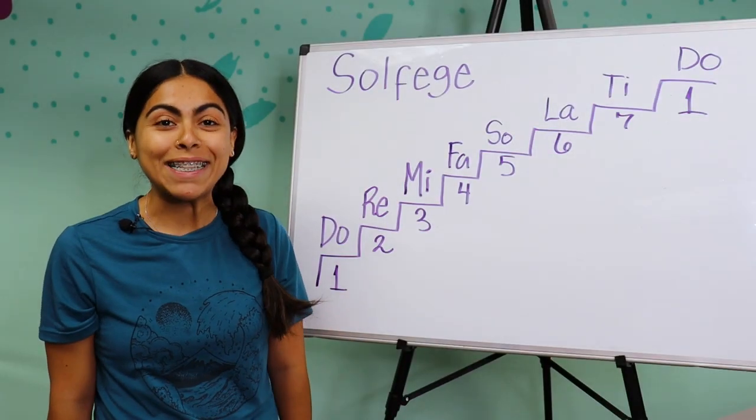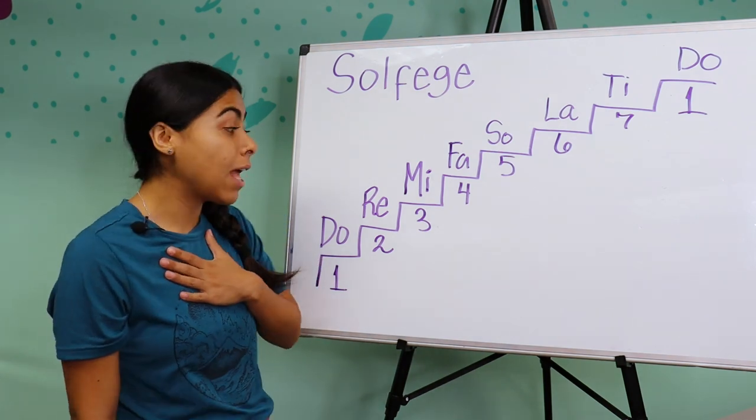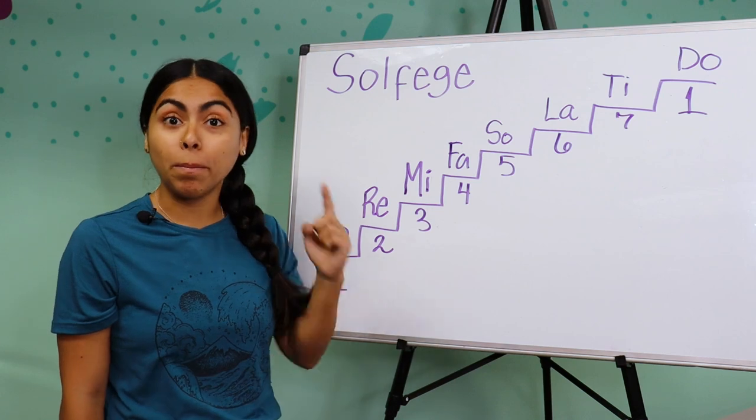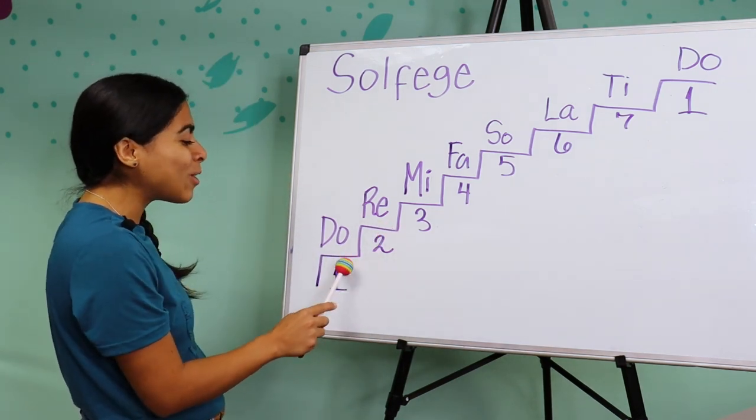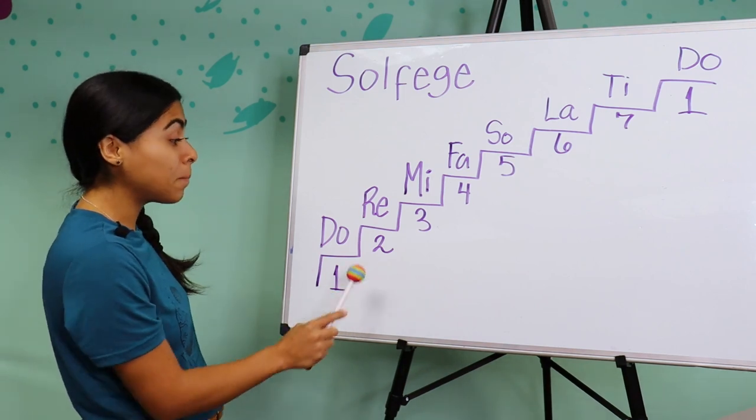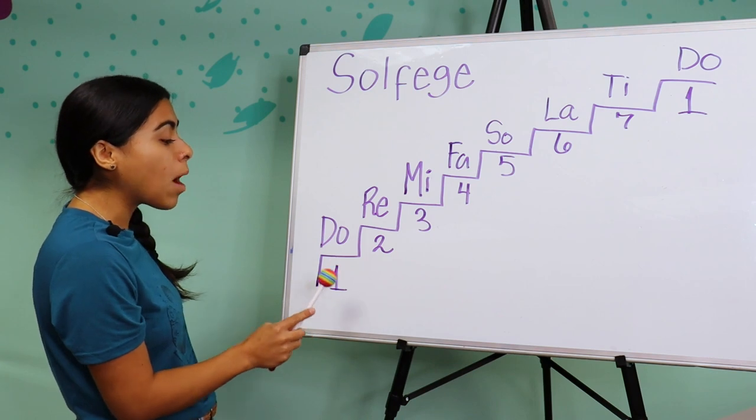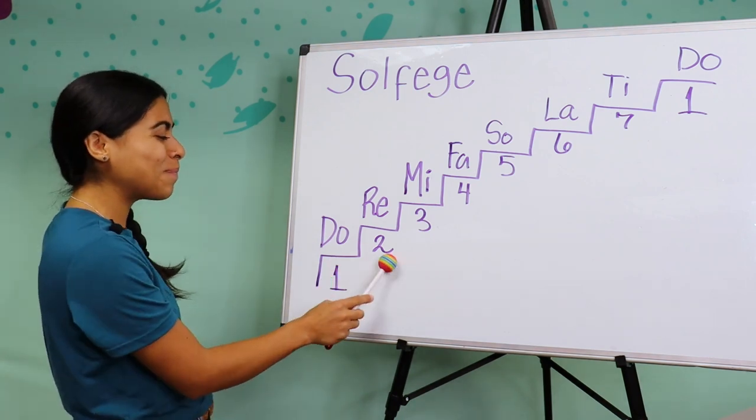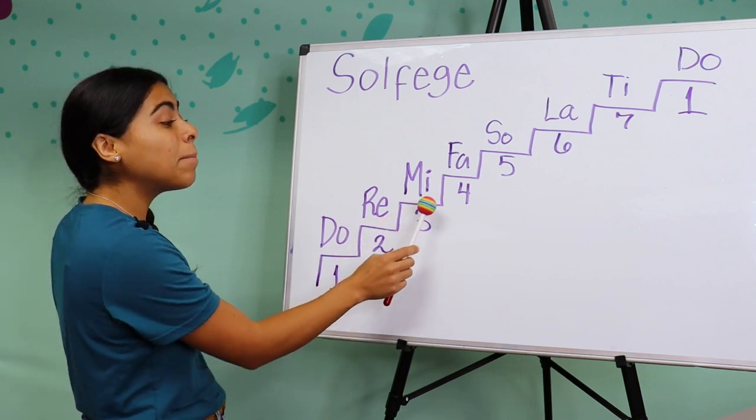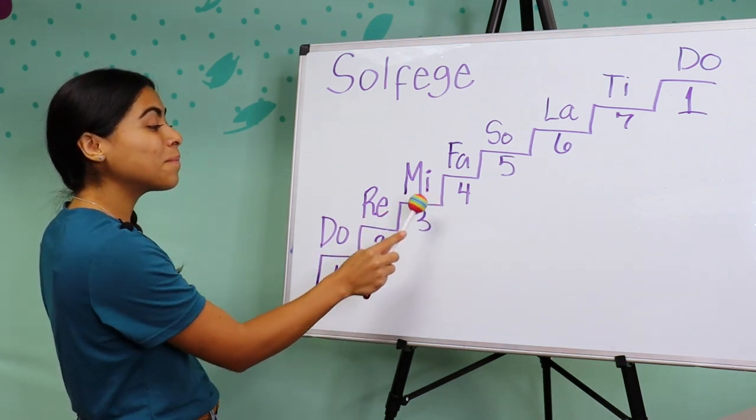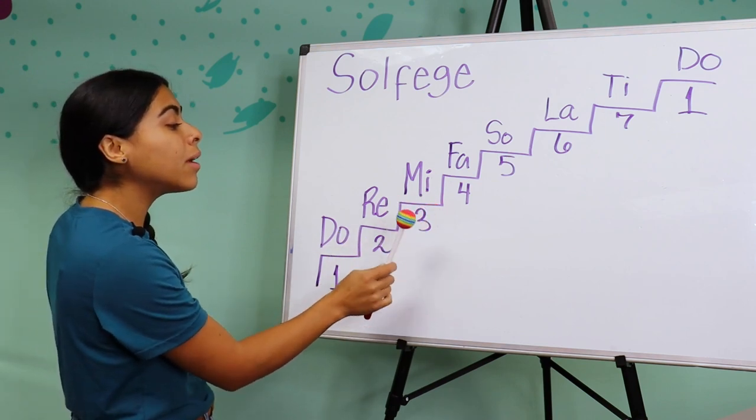Now let's go down. Let's do it with numbers: one, two, three, four, five, six, seven, one, one, seven, six, five, four, three, two, one. Beautiful. All right everyone, now I have a challenge for all of you. So I'm gonna sing first and then you're gonna repeat right after me. I'm gonna be skipping, so pay attention.